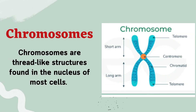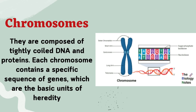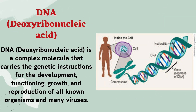Chromosomes are thread-like structures found in the nucleus of most cells. They are composed of tightly coiled DNA and proteins. Each chromosome contains a specific sequence of genes, which are the basic units of heredity.